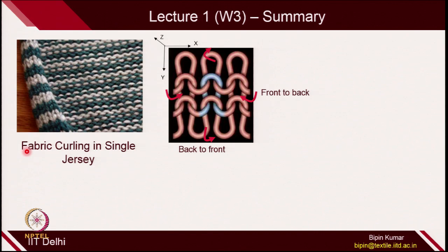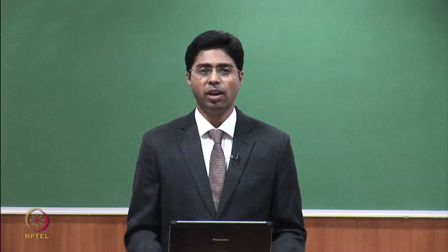If you see the loop configuration, the fabric along the wale line — the loop tries to bend from front to back. And along the course line, the loops try to bend from back to front. In the last lecture, we tried to understand why this phenomenon was happening, especially in case of single jersey fabrics. Because this type of fabric curling creates a lot of problems in fabric handling — especially sewing, garmenting, and cutting. So there is always a kind of problem which you will face while working with single jersey fabrics.